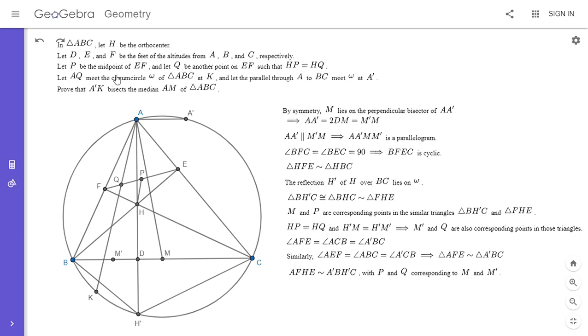So now I'm going to use all the information I have to do an angle chase that will show that A prime, M prime, and K are collinear. All right.